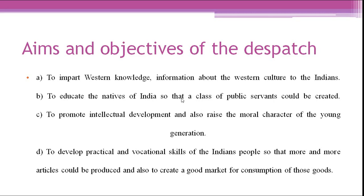The first aim and objective of Wood's Dispatch is to impart western knowledge — information about western culture — to the Indians. The second objective is to educate the natives of India so that a class of public servants could be created. They needed to provide education to the native people of India through which educated people would help the British government in their activities.